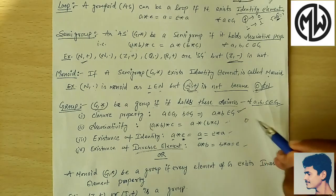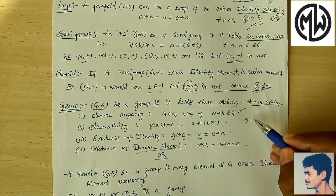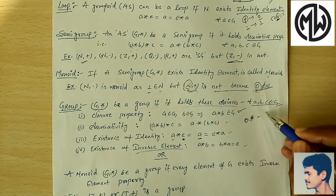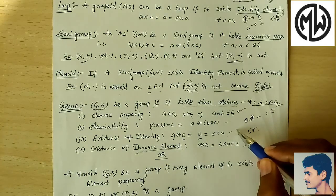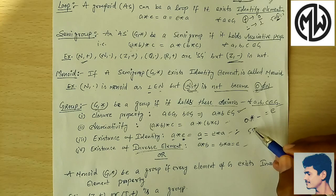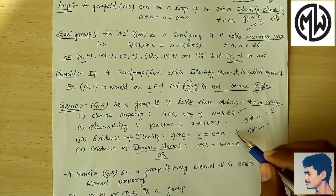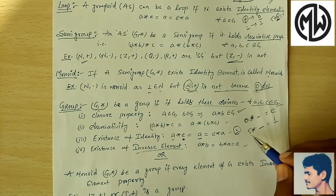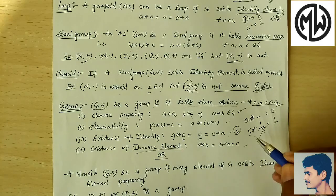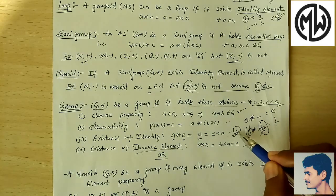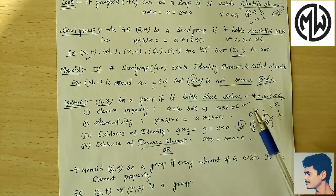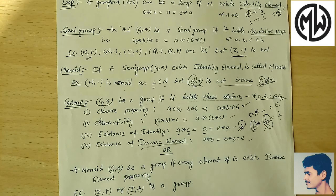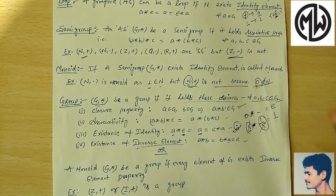For example, if we take 5 and the binary operation is dot (multiplication), then 5 dot 1 = 5, where 1 is the identity element. The fourth axiom is existence of inverse element: for 5, the inverse is 1/5, so 5 dot (1/5) = 1, which is the identity. If a set satisfies all four conditions, it will be a group. If even one condition is not satisfied, it will not be a group.